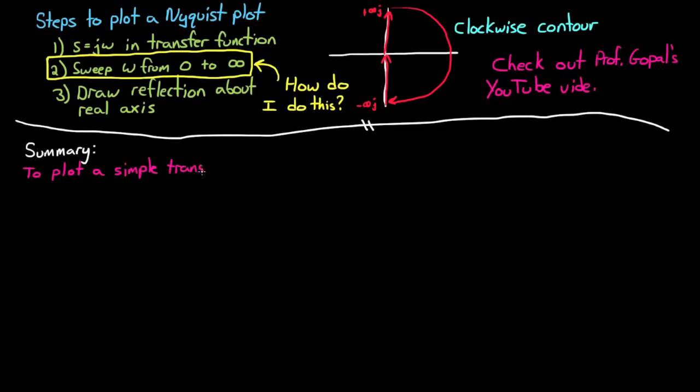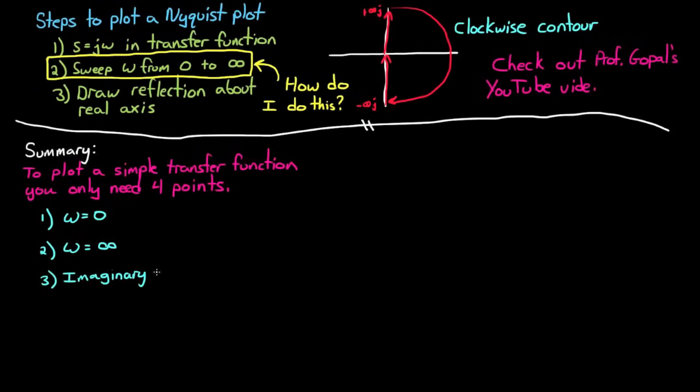For simple transfer functions, there are only 4 points that you need to solve for and then from there you can deduce the shape of the entire plot. The first point is when omega equals 0. The second point is when omega equals infinity. These determine the starting and midpoint of the Nyquist plot in the W plane. The third point is where the plot crosses the imaginary axis and the fourth point is where the plot crosses the real axis.